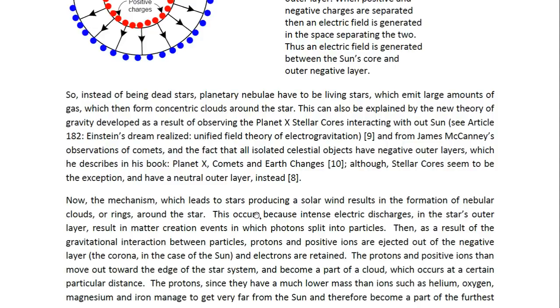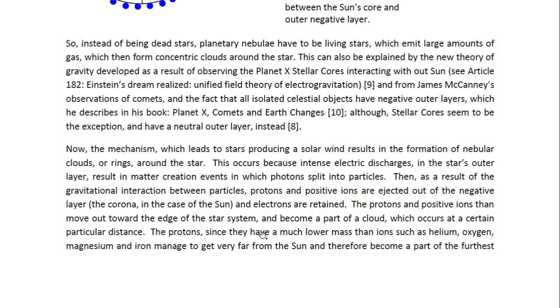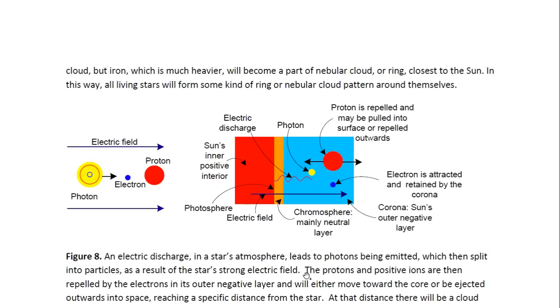Now, the mechanism which leads to stars producing a solar wind results in the formation of nebula clouds or rings around the star. This occurs because intense electric discharges in the star's outer layer result in matter-creation events in which photons split into particles. Then as a result of the gravitational interaction between particles, protons and positive ions are ejected out of the negative layer, the corona in the case of the sun, but electrons are retained. The protons and positive ions then move out towards the edge of the star system and become a part of a cloud which occurs at a certain particular distance.